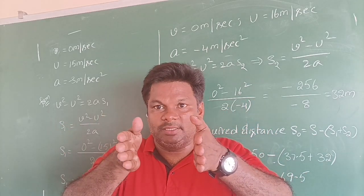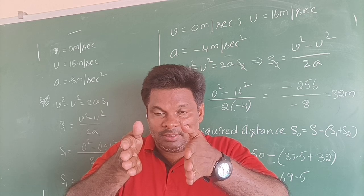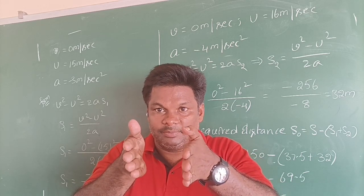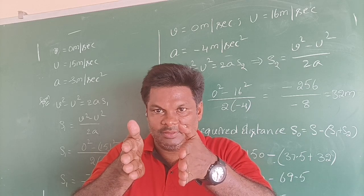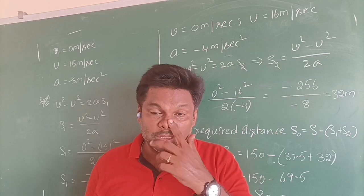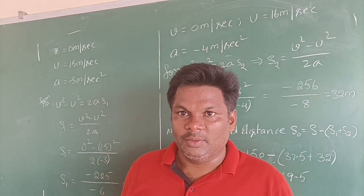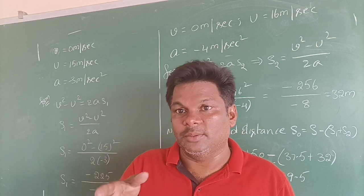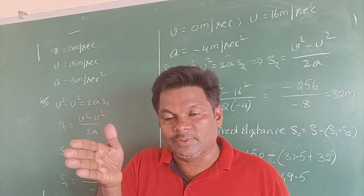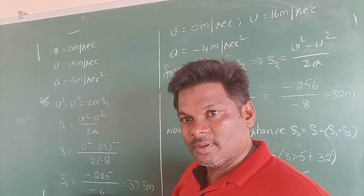Now there is a distance between them. How much it is? This is what he is asking. For that you need to calculate the distance covered by the car until its velocity becomes 0. By using the formula V square minus U square is equal to 2AS1. S1 is equal to V square minus U square by 2A.